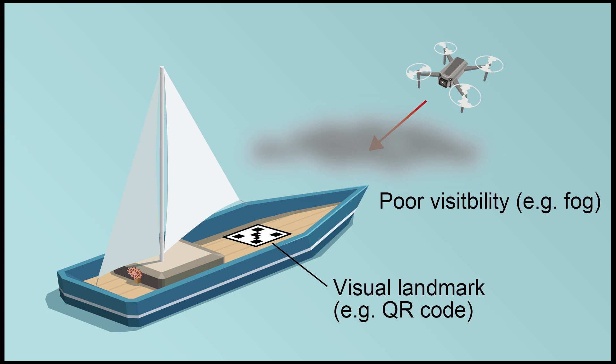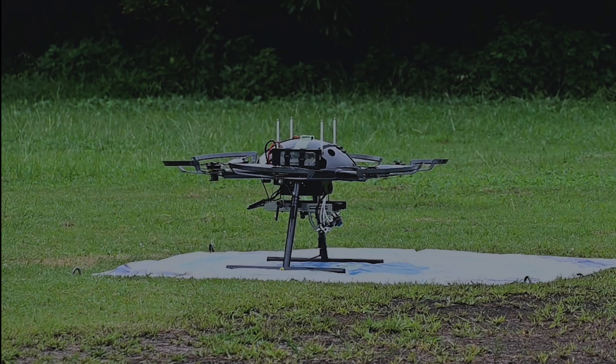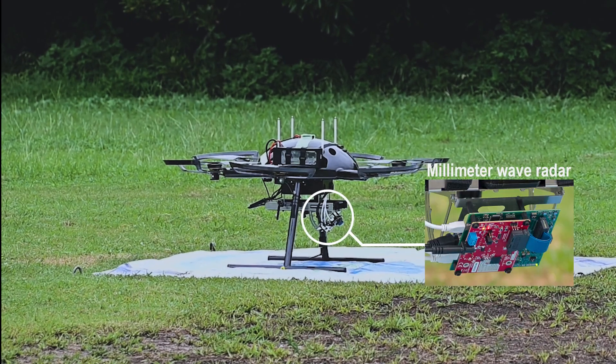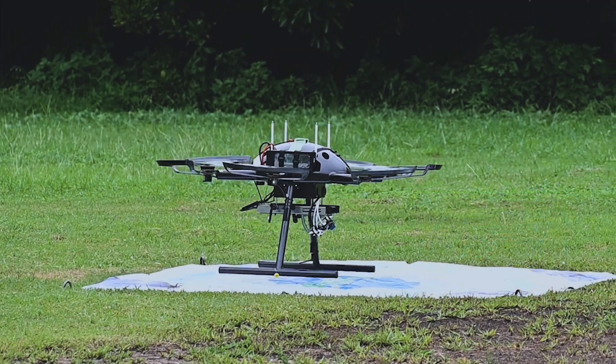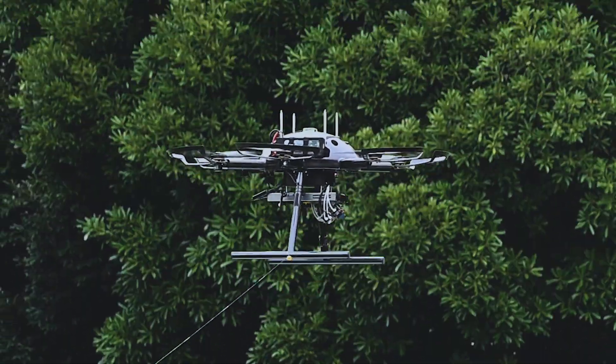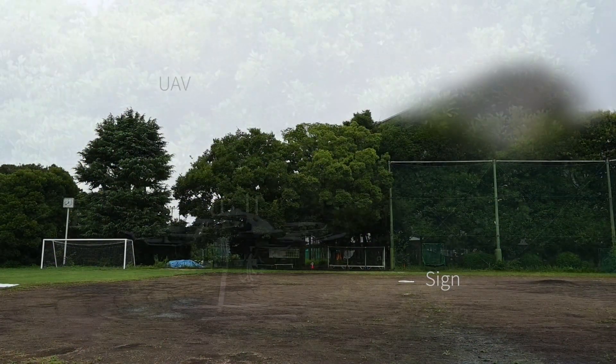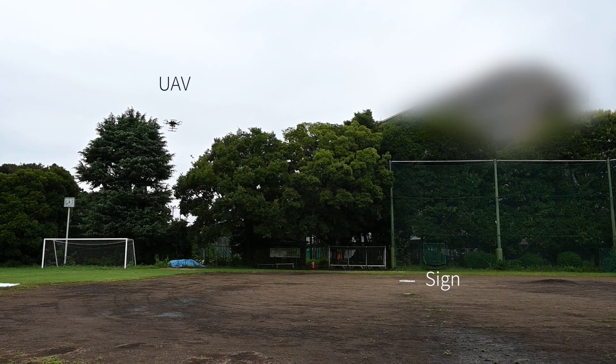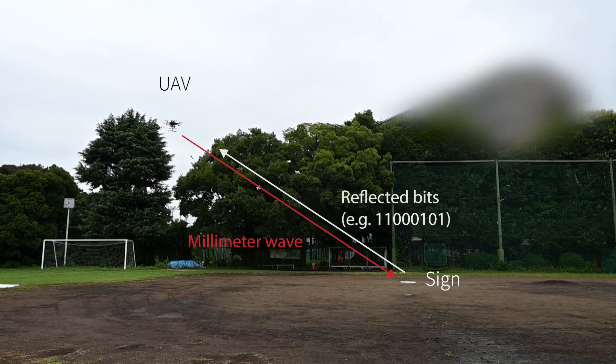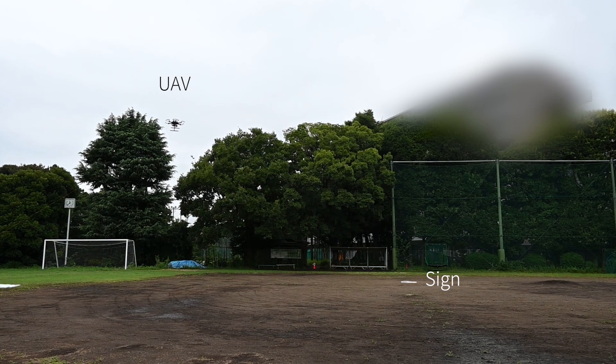Conventionally, visual signs such as QR codes have been used. However, they do not work in inclement weather or at nighttime due to poor visibility. We adopt a millimeter wave radar as a sign reader device which is robust to weather conditions. Here we develop MilliSign, a sign-to-UAV communication system which guides UAVs even in poor visibility conditions.